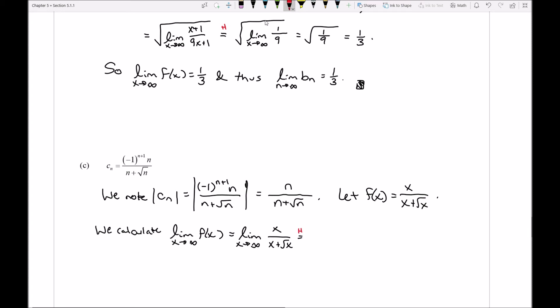So take the derivative of my numerator. It's going to get me 1. Derivative of the denominator is going to be 1 plus, and let's say it's going to be 1 over 2 square root x.